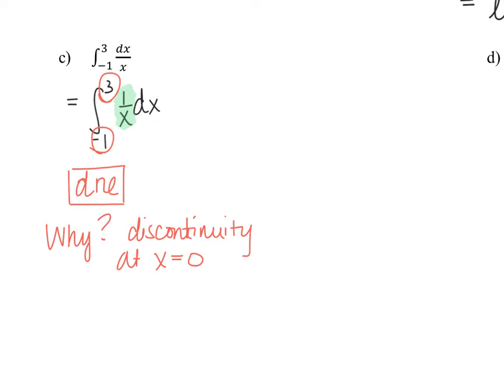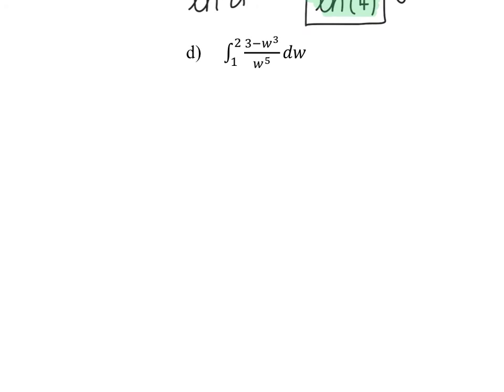Example D asks us to integrate from 1 to 2 the function (3 minus w cubed) over w to the fifth. Remember, when computing an antiderivative, you cannot take the antiderivative of the numerator and denominator separately — just as you can't differentiate the top and bottom separately without the quotient rule. If something wasn't okay to do with derivatives, it's not okay with antiderivatives either. So on this problem, we need to do a little preliminary algebra first.